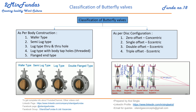Now the important section — categorizing based on disc configuration. For zero offset configuration, the centerline of the disc and shaft is at the same point, so there is no offset. That's why we call it a concentric type butterfly valve. For single offset configuration, the center point is offset by some distance from the shaft centerline.